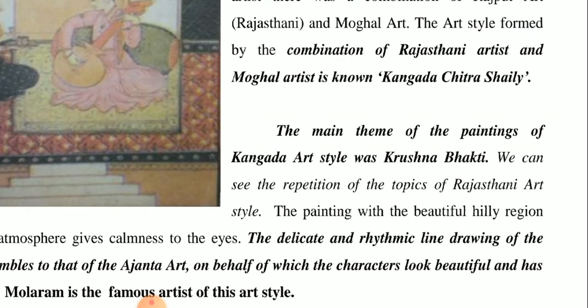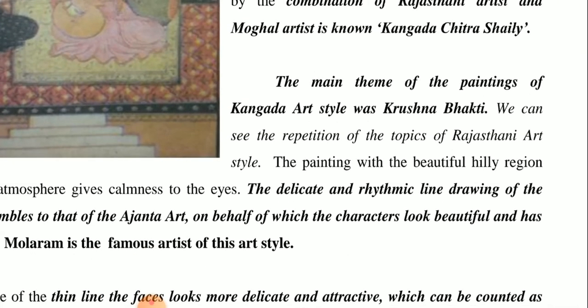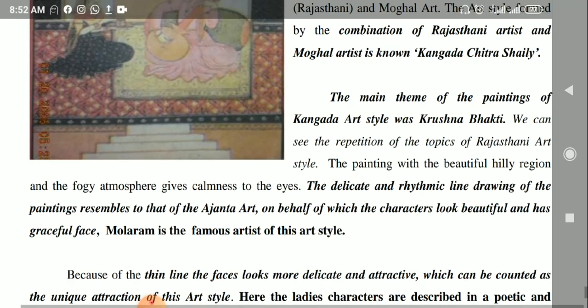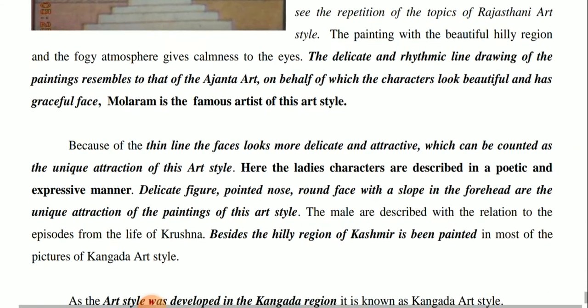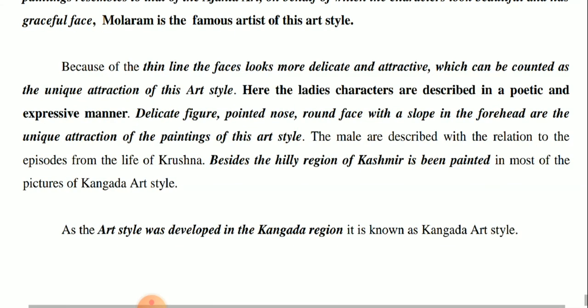Kangda Saili is the combination of Mughal art plus Rajput art. The main theme of the paintings of Kangda art style was Krishna Bhakti — the kings here were also Krishna devotees, so the theme of the paintings was Krishna Bhakti. We can see repetition of topics from the Rajasthani style here. The paintings with the beautiful hilly region and foggy atmosphere give calmness to the eyes. The delicate and rhythmic line drawing of the paintings resembles Ajanta art, and the characters look beautiful with graceful faces.